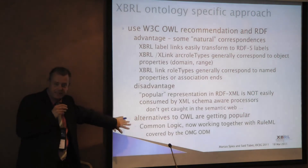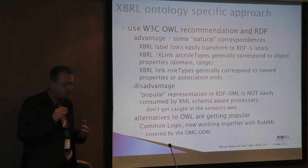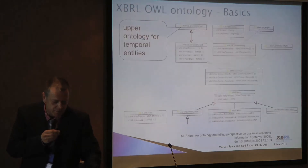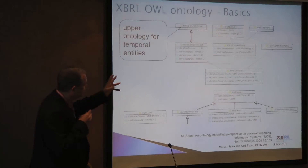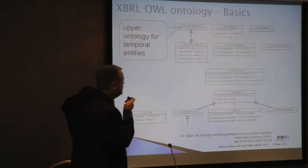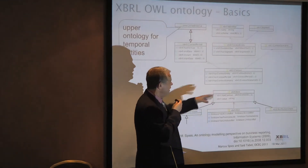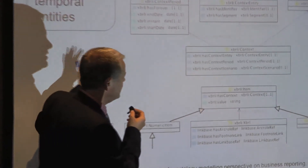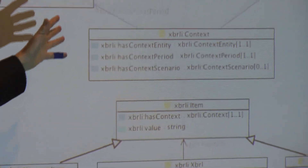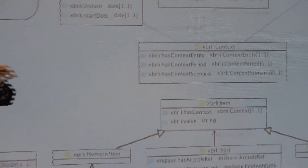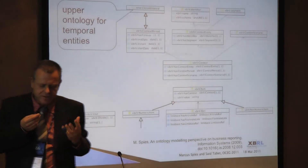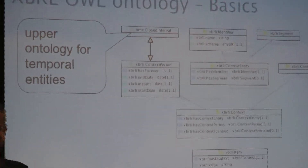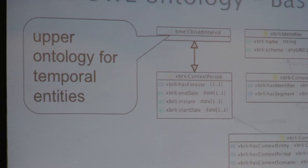Alternatives to RDF/XML are getting popular — one very interesting option is Common Logic, supported by the Rule ML group and the Object Management Group. Now, some examples: the XBRL item in an ontology links all contextual information — entity, period, scenario — via properties rather than classes within classes. The advantage of using an ontology here is what we call intelligent information processing, enabled by upper ontologies.